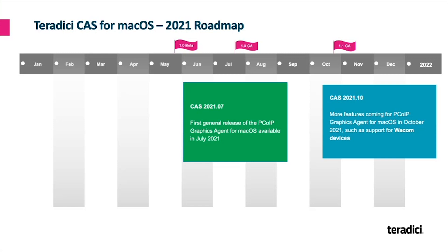Thanks, Kevin. I just wanted to finish off this session with some quick details on availability and what the roadmap looks like. We're currently in beta on the solution. It goes into general availability in the second half of July 2021, which will be a full-featured product. We'll keep enhancing those features with our next release, which will be our 1.1 release in the second half of October 2021. That's going to have additional features for our graphics agent and will include enhancements like support for Wacom devices. Thank you, everyone, and thank you for listening today. Goodbye.